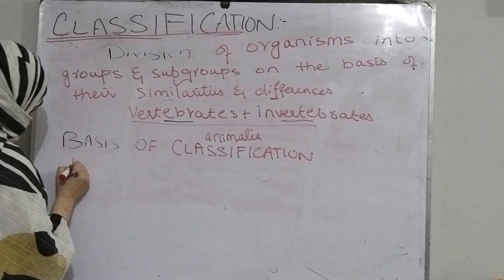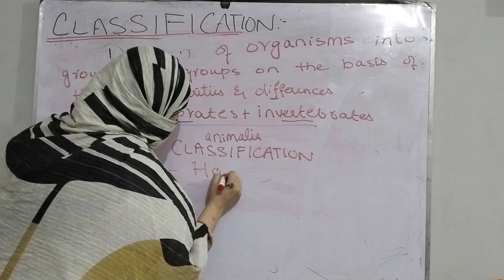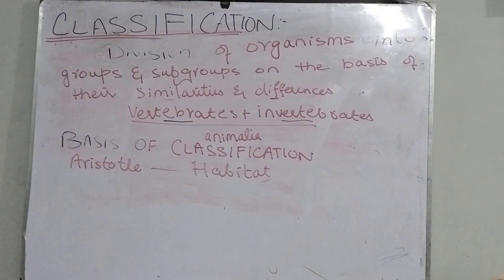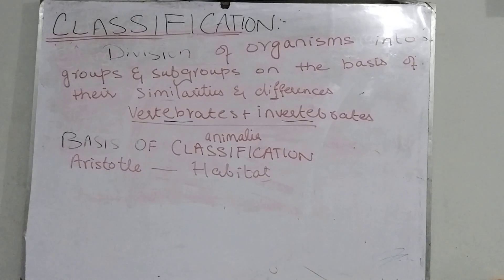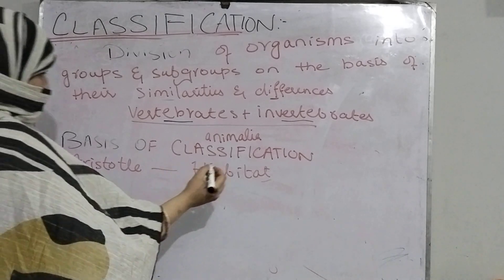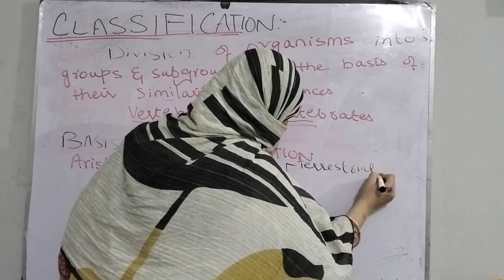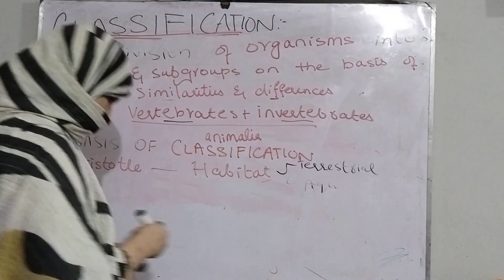We divide organisms into terrestrial, which are land organisms, or aquatic, which are water organisms.